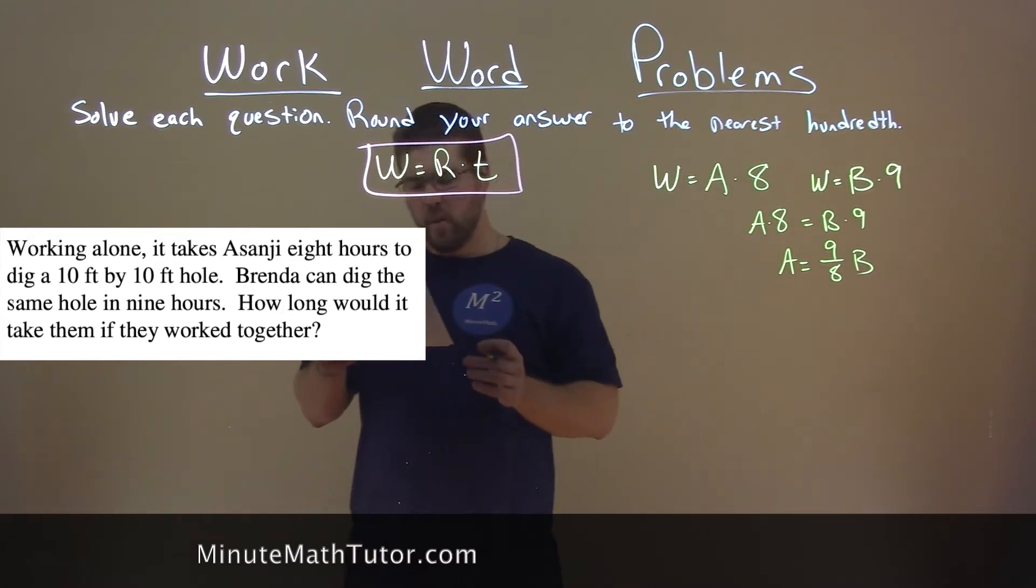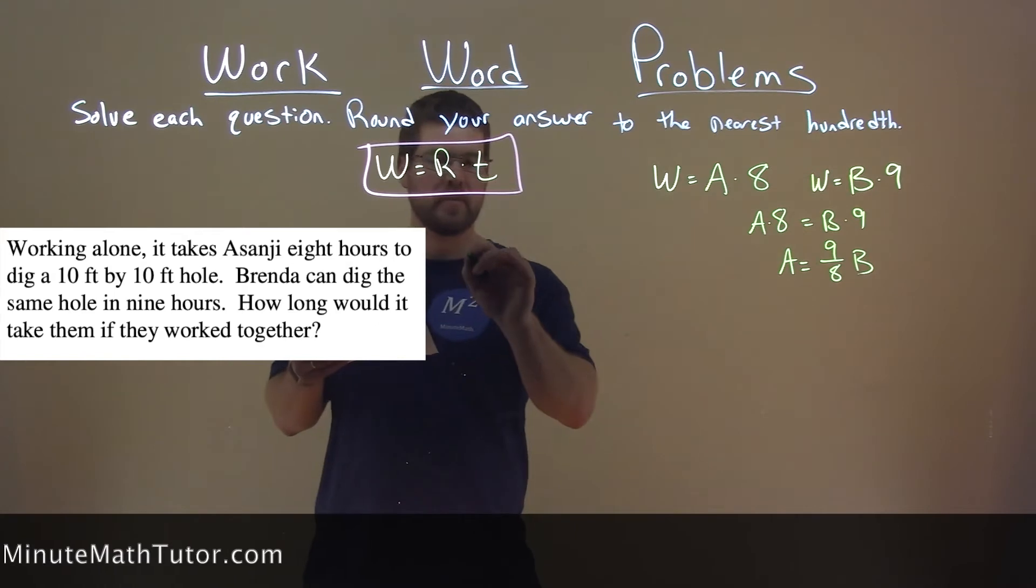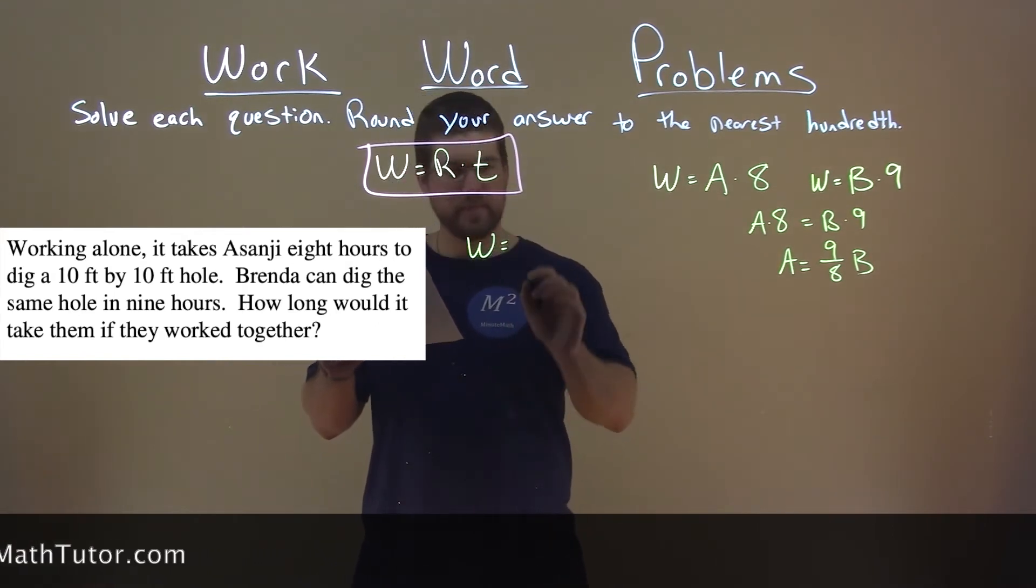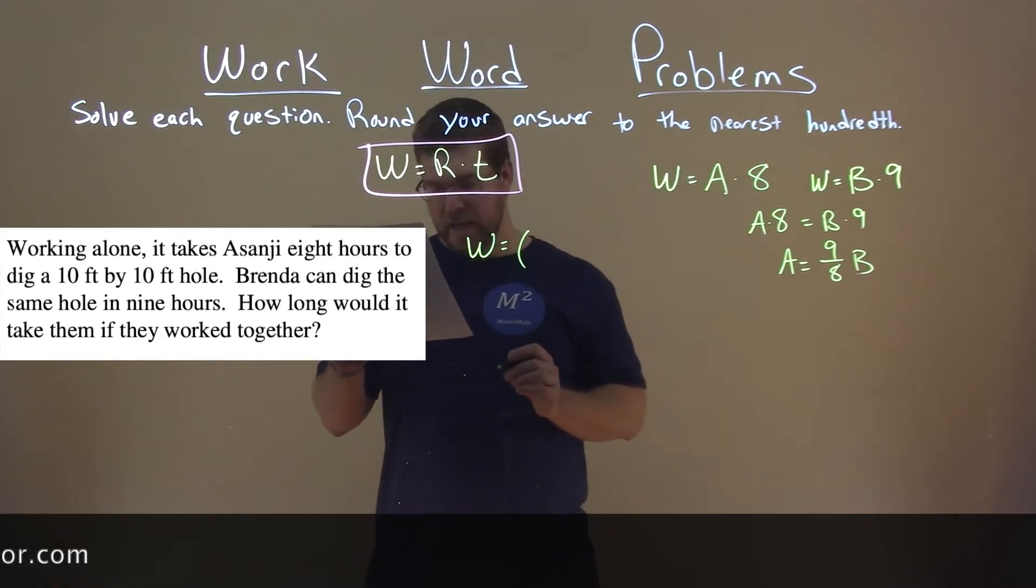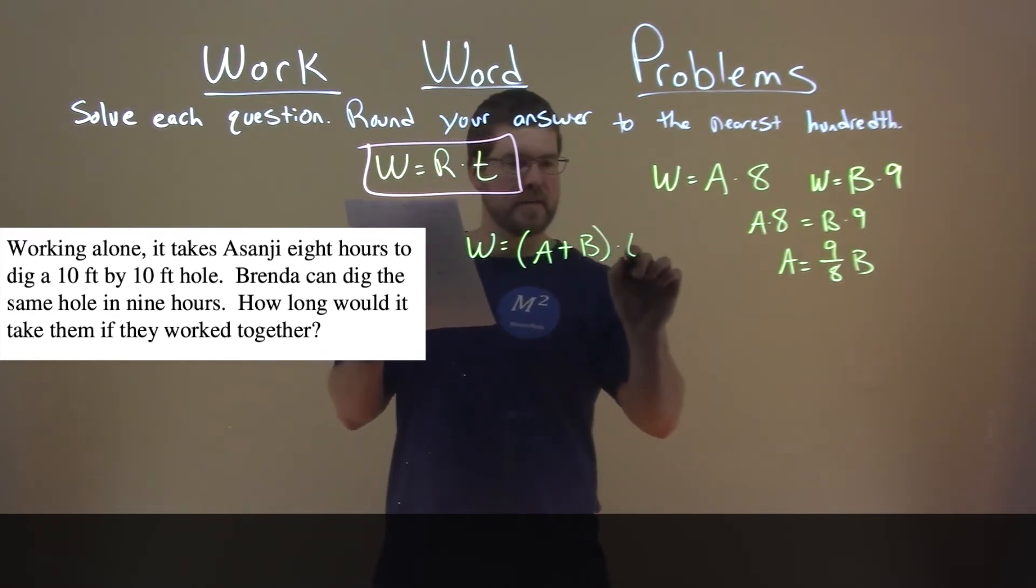So now we want to find how long it would take them if they worked together. So that same job, W, the ten foot by ten foot hole, is equal to their work rates added together times time.